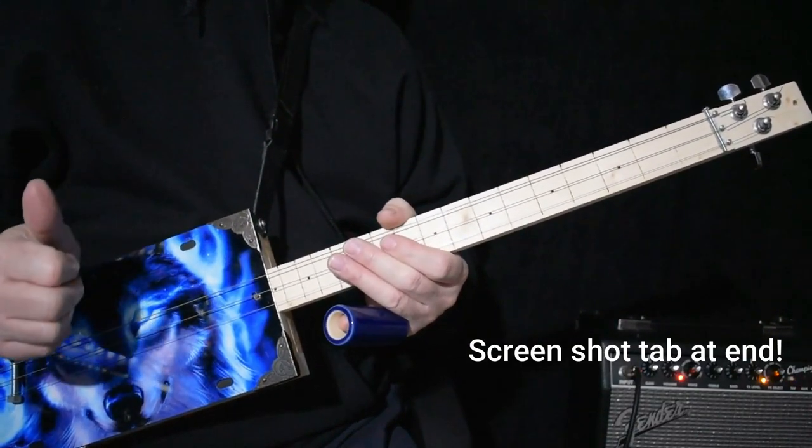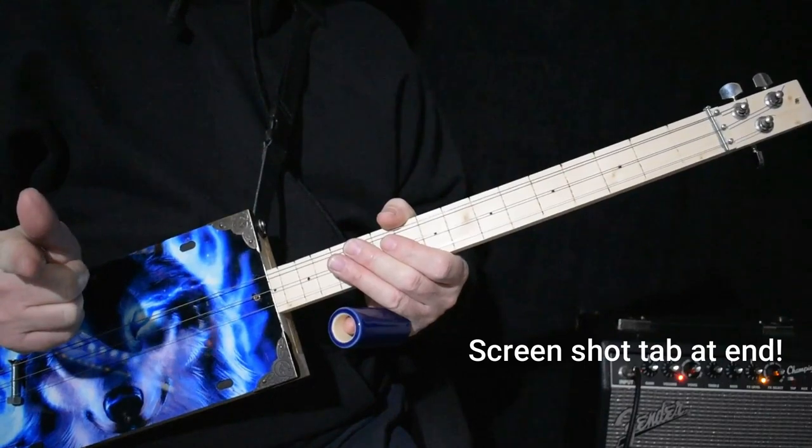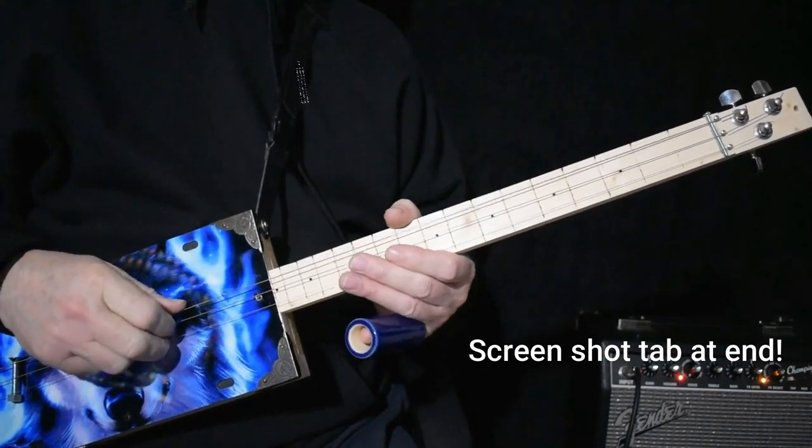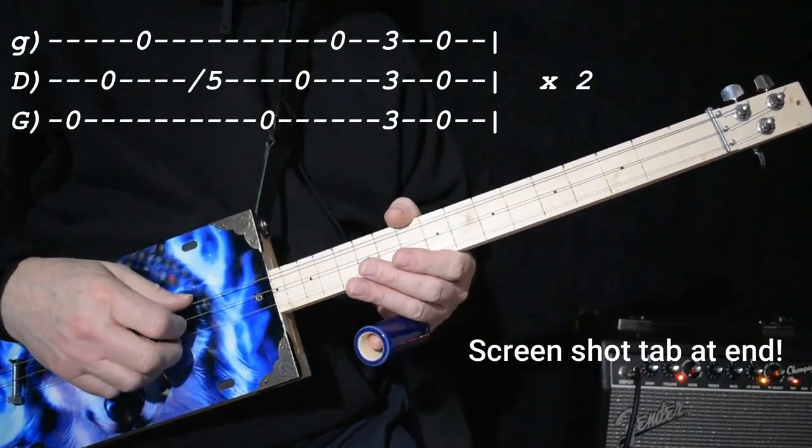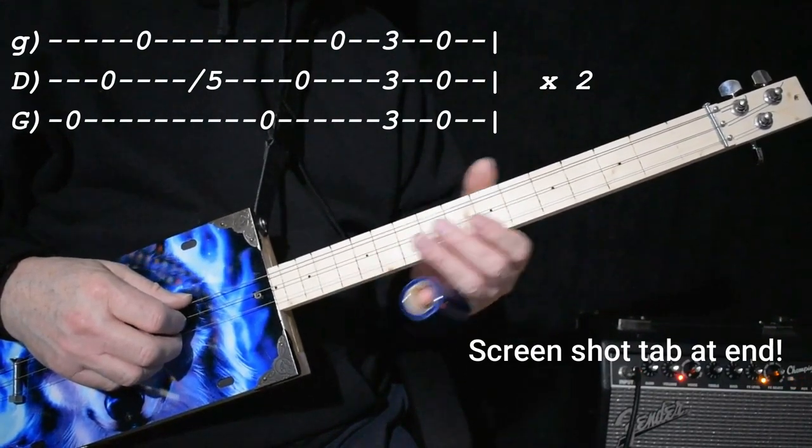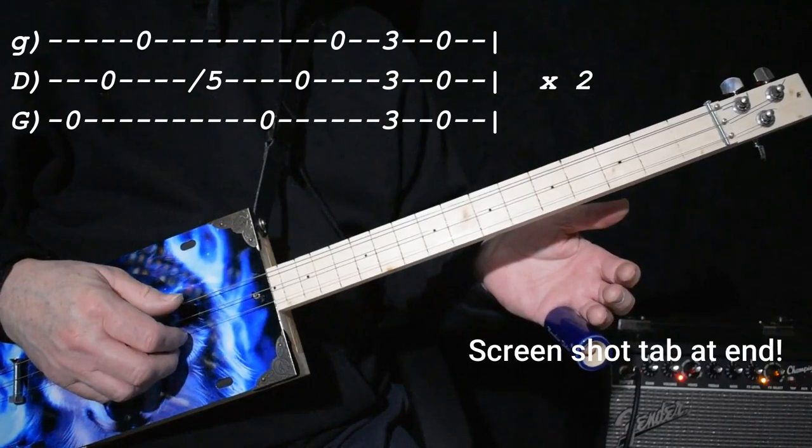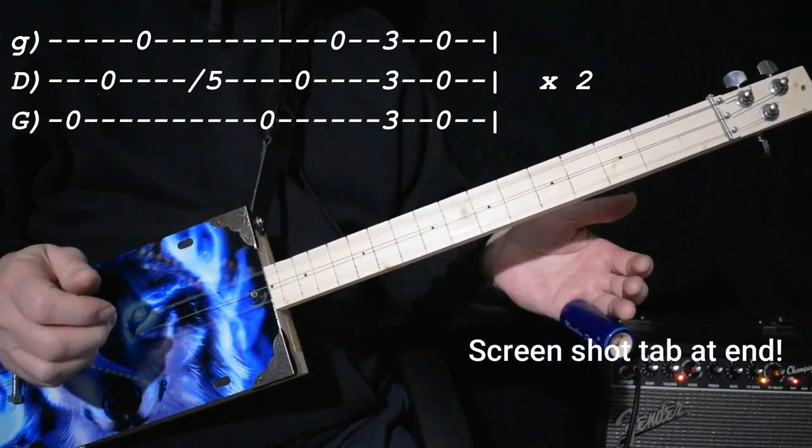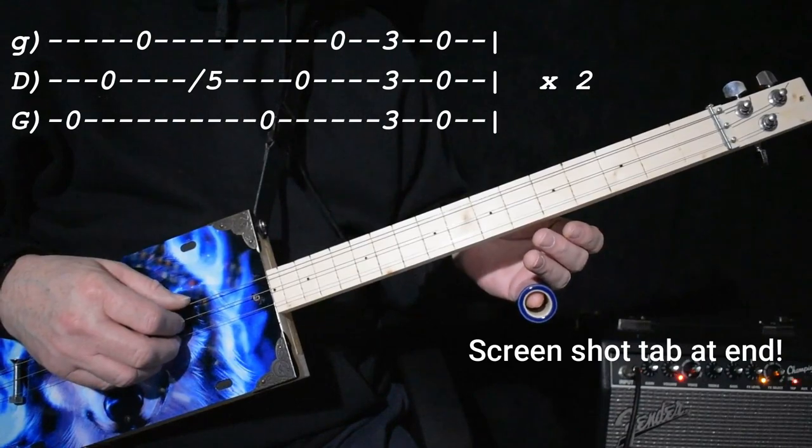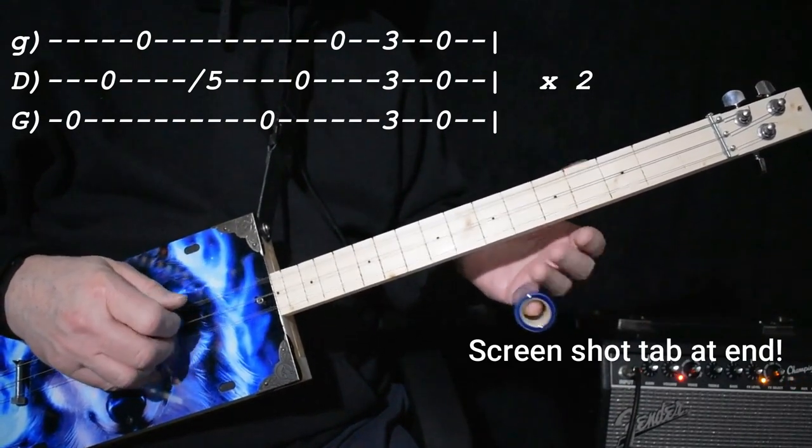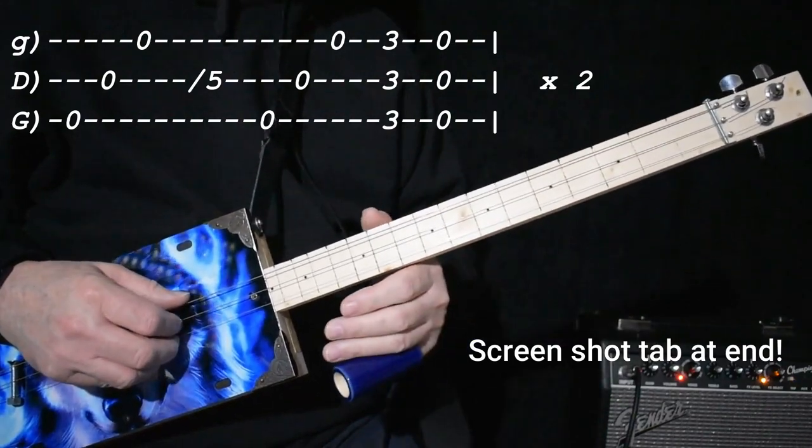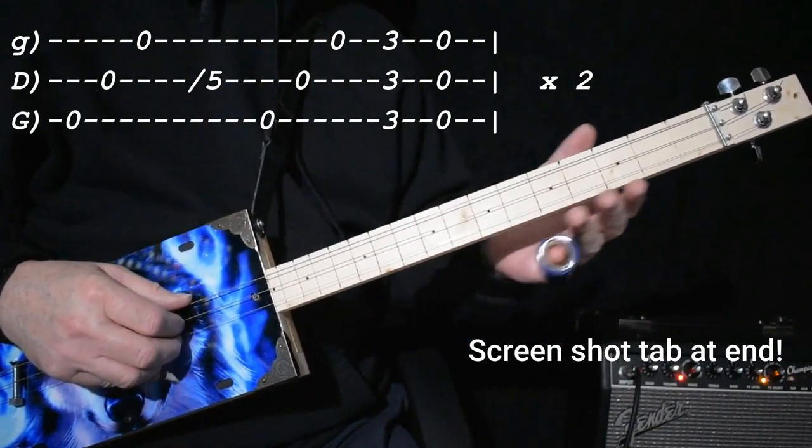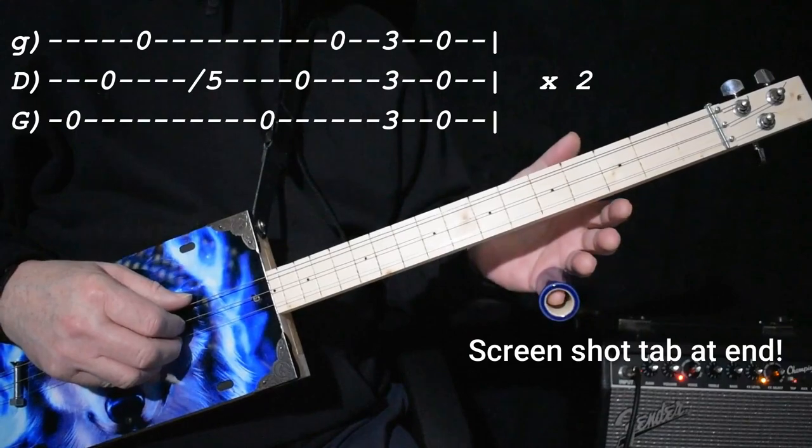I'm using a forward roll, which is thumb, first finger, and second finger. [Demonstrates forward roll] Especially after you've done it once, you know.